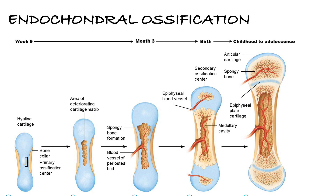For endochondral ossification, one of the things you're going to see is the word 'chondral.' Chondral means chondrocytes, which is for cartilage. So this tells us that we are going to have cartilage as our mold or model that this bone will form from. We're going to use hyaline cartilage specifically — not elastic, not fibrocartilage.